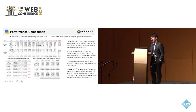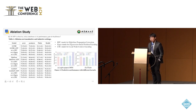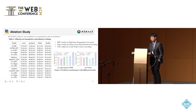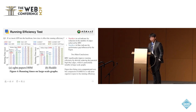In ablation studies, we prove that every component of our method has its own merits. We also assign four different arbitrary values to the kernel coefficient, and looking at the right-hand side graph, our adaptive mechanism outperforms all those fixed values. We also conduct a running efficiency test: because our mask correction mechanism reduces edges to high-degree nodes, our method is actually much more efficient, and accuracy is not compromised.